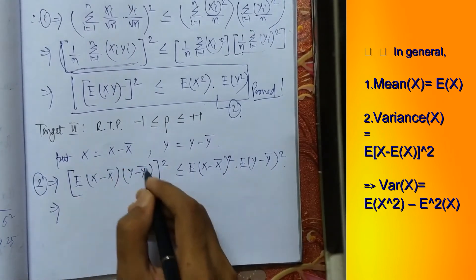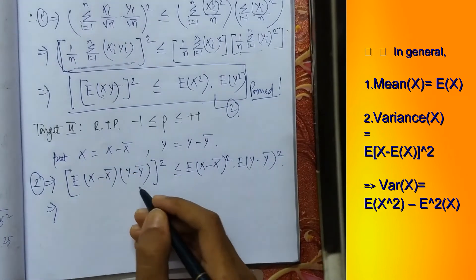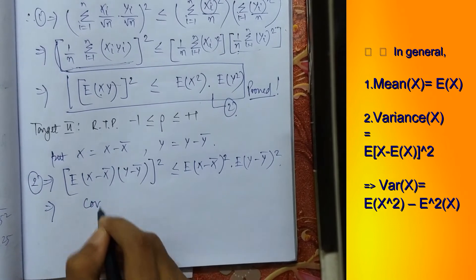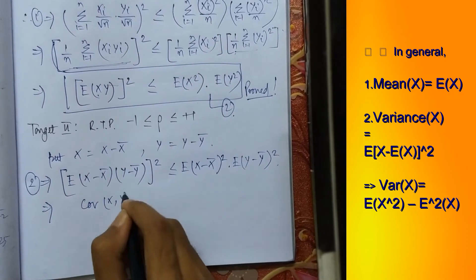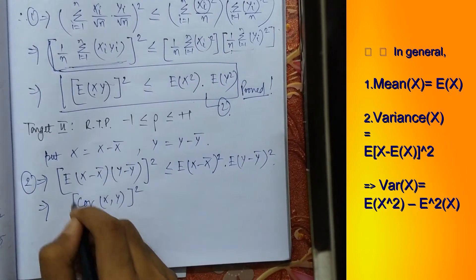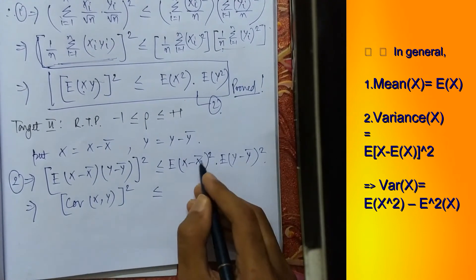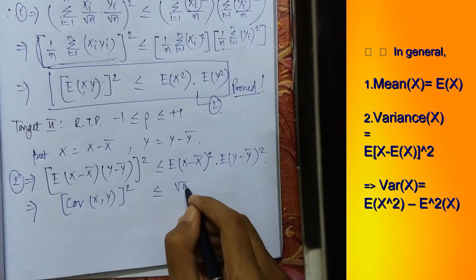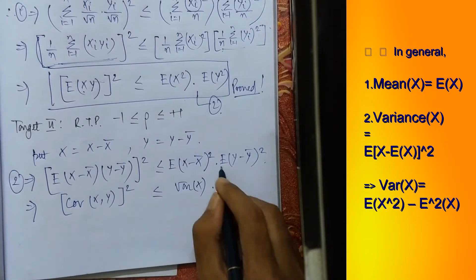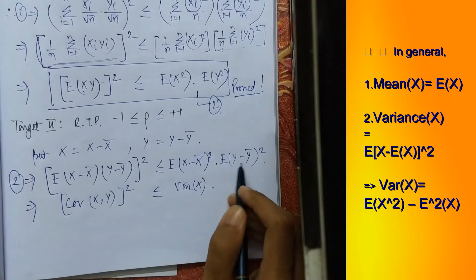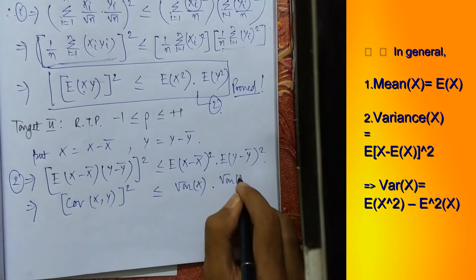This inner part is symbolic of covariance of x comma y, this gives us covariance of x comma y and square will remain as it is. Expectation of x minus x bar whole square, this is the formula of variance of x. This is variance of x and expectation of y minus y bar whole square, similarly is the variance of y.